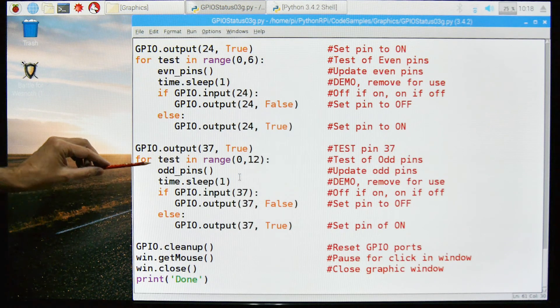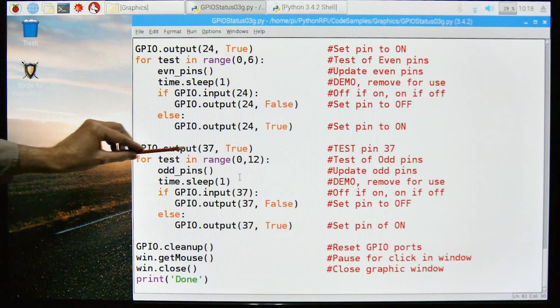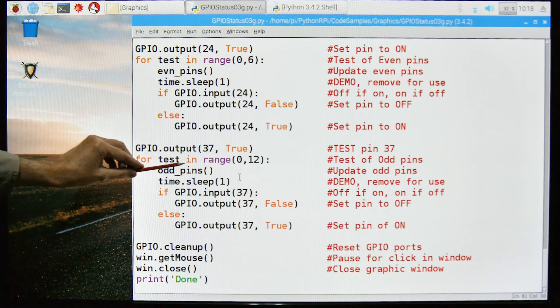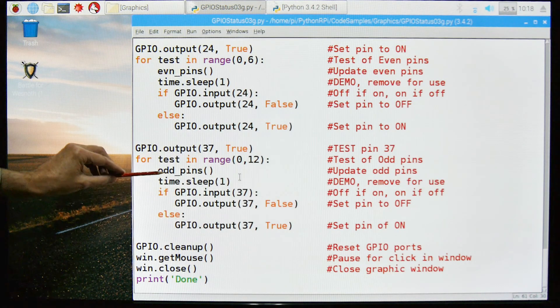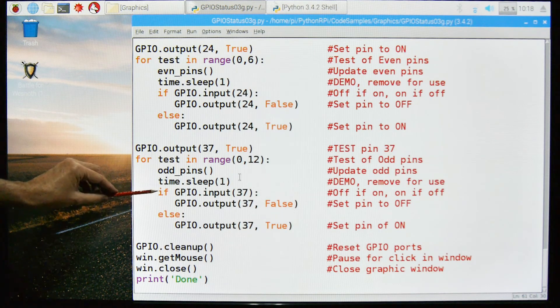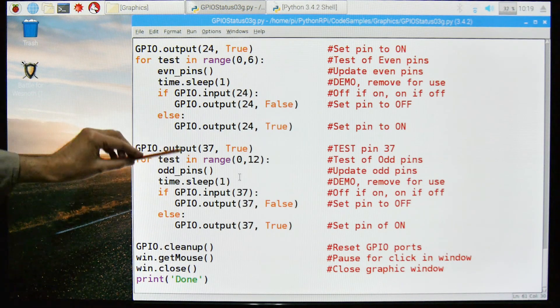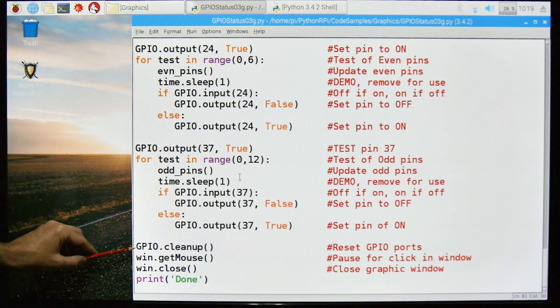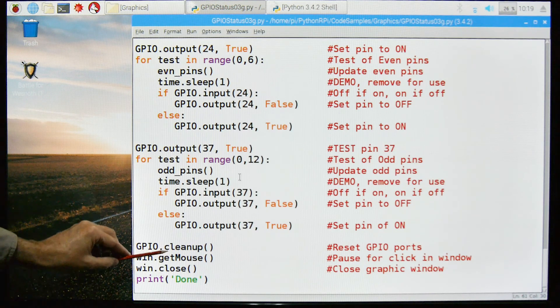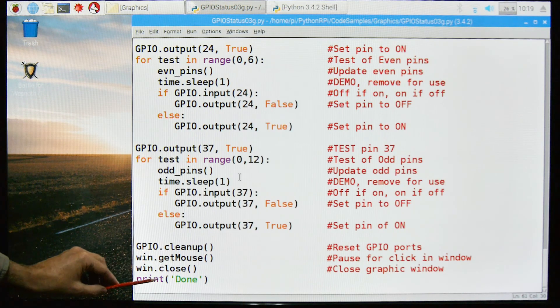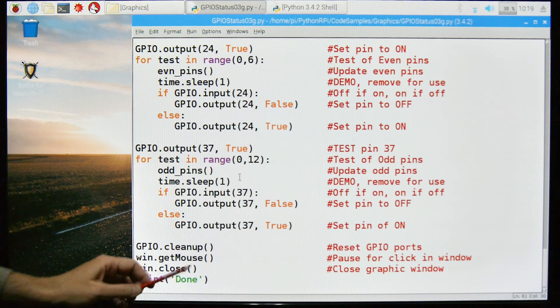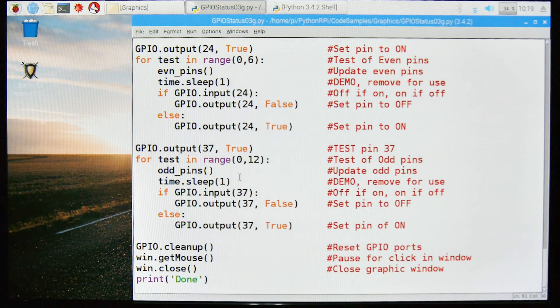Pin 37 is pretty much the same, we're going to set it to true. For the range between 0 and 12, we're going to refresh the odd pins, we're going to go to sleep for one second. If the pin is true, we're going to set it to false, if it's false we're going to set it to true. We're going to go through that from 0 to 12, and when we're done we're going to drop out, we're going to do our GPIO cleanup which resets all the pins, we're going to wait until there's a mouse click, and when that happens we're going to close the window and we'll print done. So that's the software in detail, let's do a demo and see how it actually works.